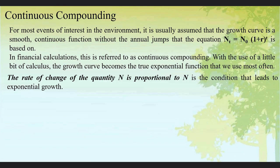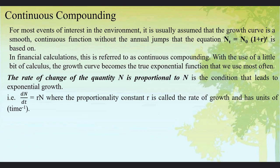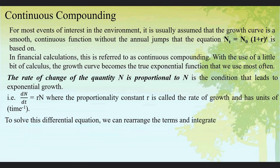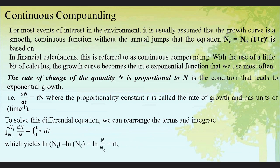That is, dN/dt = rN, where the proportionality constant r is called the rate of growth and has units of time to the power minus one. If we solve this differential equation, we can rearrange the terms and integrate, which yields ln(Nt) - ln(N0) = ln(Nt/N0) = rt.